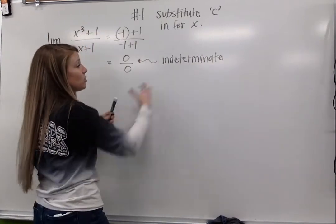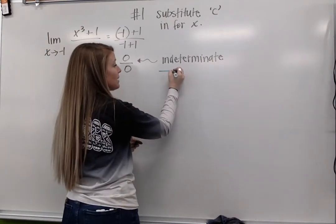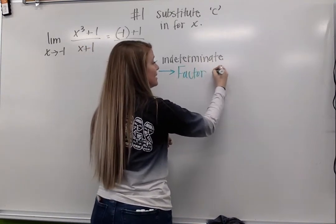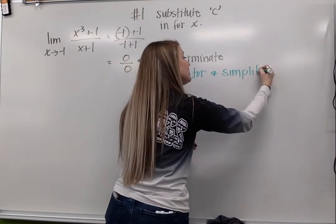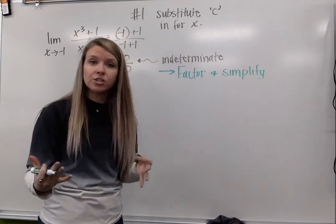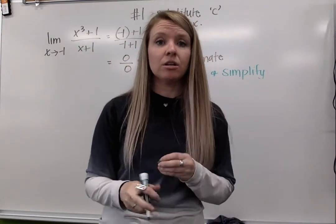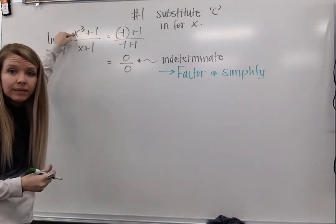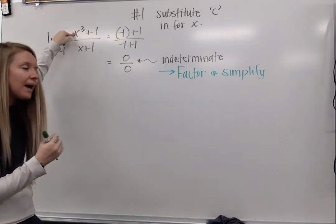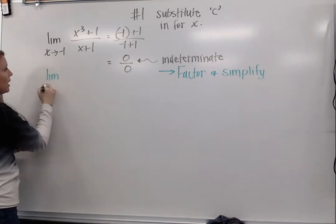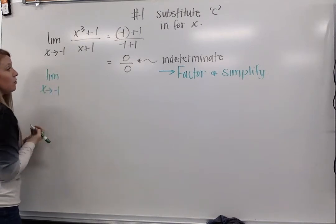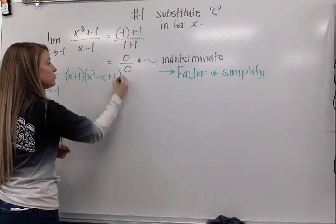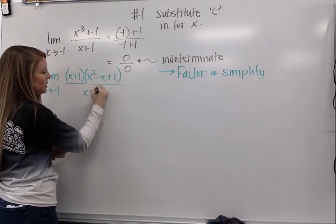So when we run into this indeterminate form, one thing I can do to work around this issue is factor and simplify. If I can factor my function, it might help me figure out my answer. So in this case, I can factor my x cubed plus 1. It's the sum of cubes, so we can use the pattern to factor that out. This is now the limit as x approaches negative 1 of (x + 1)(x² - x + 1) all over (x + 1).